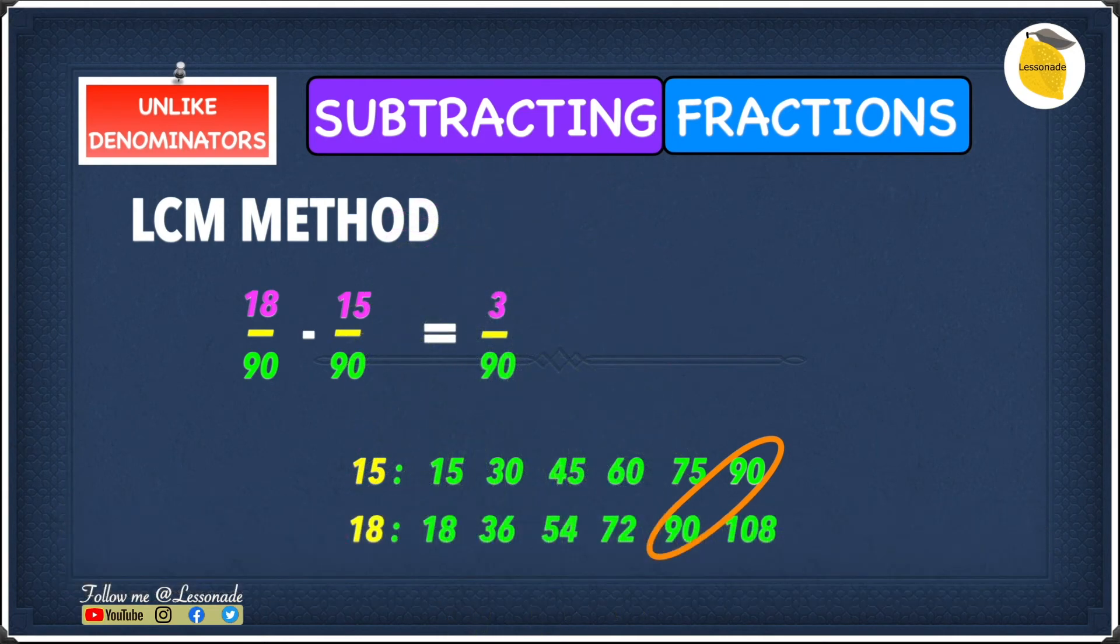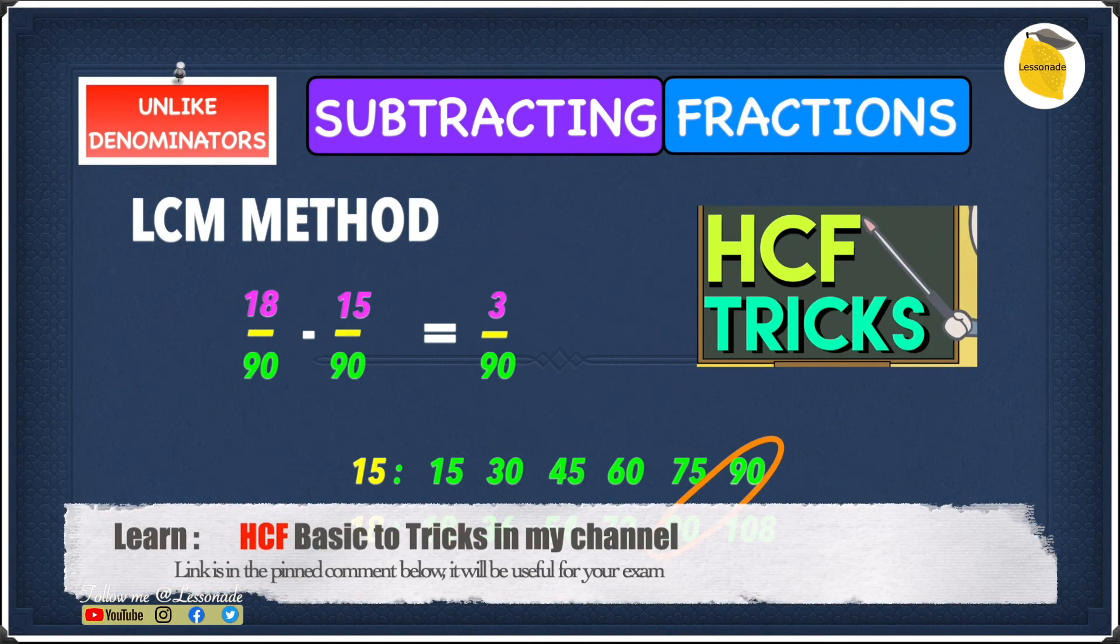But if you notice, 3 over 90 has the highest common factor. They both have the highest common factor. Because they both have a highest common factor they can be simplified. If you guys want to know more about finding the highest common factor I've got a video on that. The link is in the description below so go check that out.